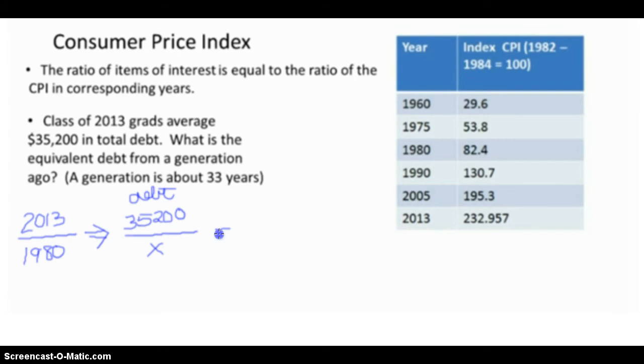Now I put my equal sign, and then I look at my consumer price index information. In 2013, the CPI is 232.957, and in 1980, it is 82.4.